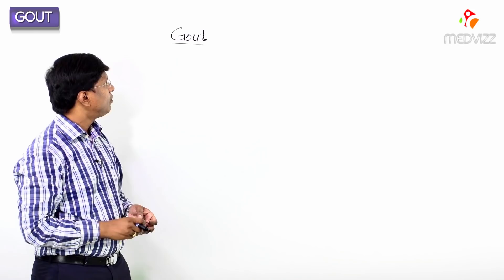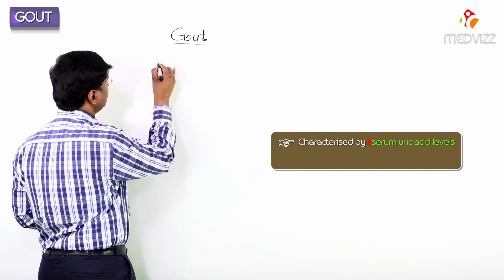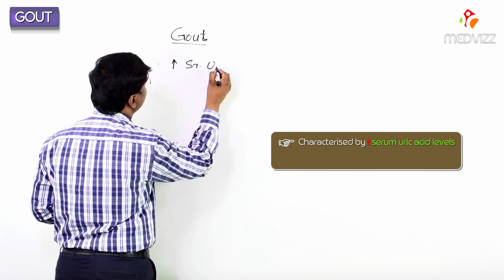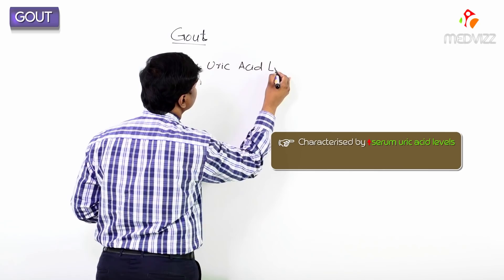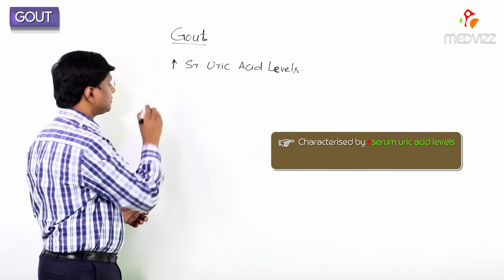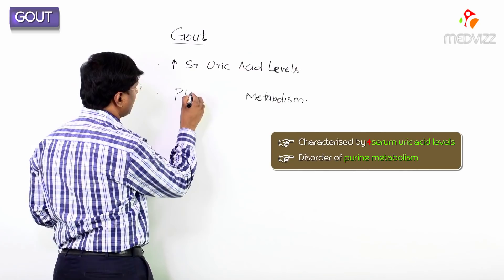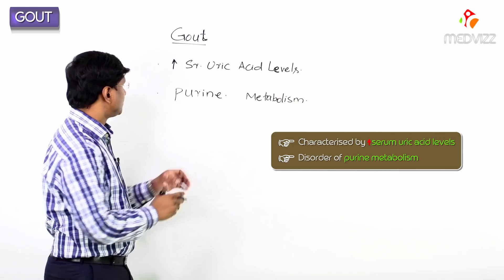What exactly is gout? Gout is a disease which is characterized by elevated serum uric acid levels. Where is this uric acid coming from? Gout or gouty arthritis is the disorder of the purine metabolism.